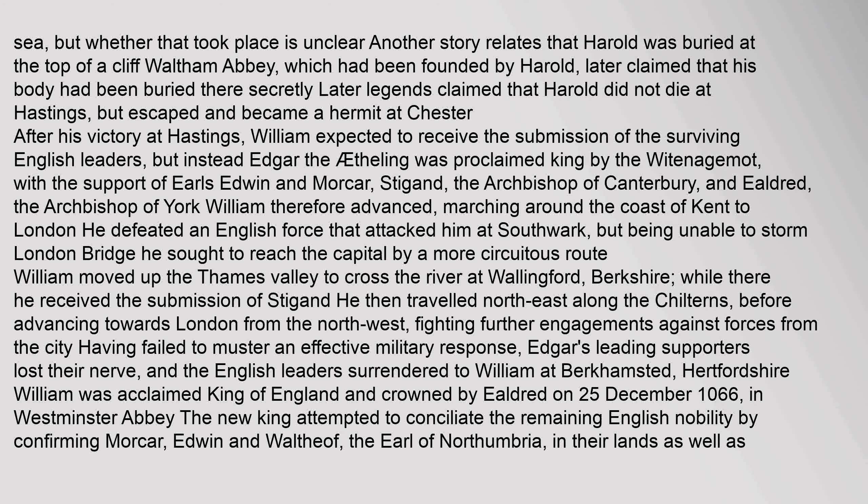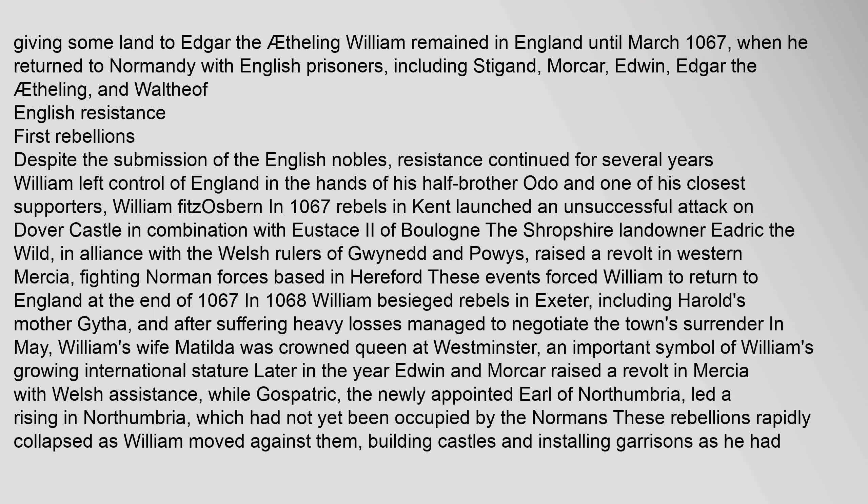The new king attempted to conciliate the remaining English nobility by confirming Morcar, Edwin and Waltheof, the Earl of Northumbria, in their lands, as well as giving some land to Edgar the Aetheling. William remained in England until March 1067, when he returned to Normandy with English prisoners, including Stigand, Morcar, Edwin, Edgar the Aetheling, and Waltheof.